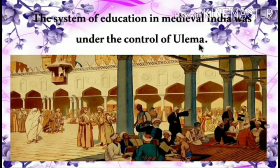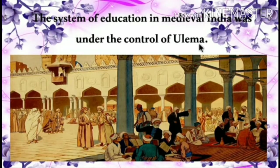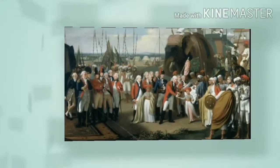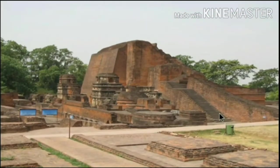Ulema means a board of scholars. Make a note of it: the system of education in medieval India was under the control of Ulema. In the later medieval era, the British came to India and introduced English education. With the coming of the European missionaries, western education made firm advances in the country.